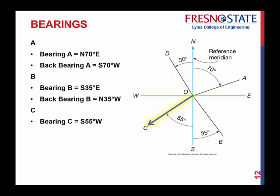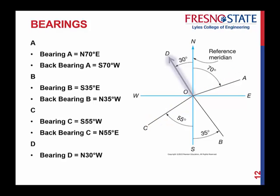Point C: bearing is south 55 degrees west — measuring the acute angle of 55 degrees from the reference meridian, in quadrant 3 (southwest). Back bearing is the opposite direction: north 55 degrees east, same magnitude. Point D: north 30 degrees west — reference meridian is north, quadrant 4. Back bearing is south 30 degrees east, same magnitude of 30 degrees, measured off the reference meridian of south.